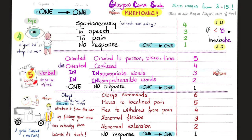For verbal response, remember the 5 love languages. Oriented to person, place, and time is 5. Disoriented is 4. Inappropriate words is 3. Incomprehensible words is 2. No response gives you 1.